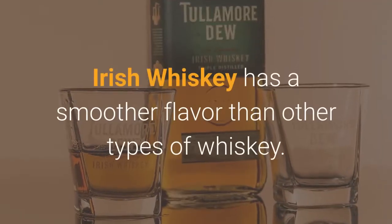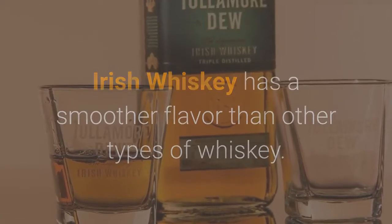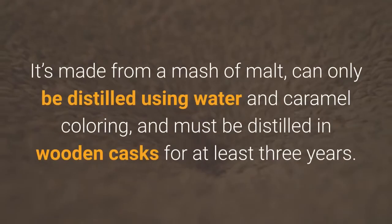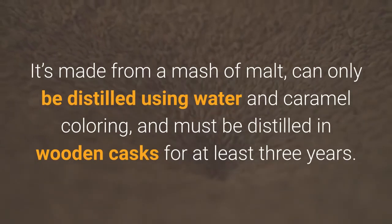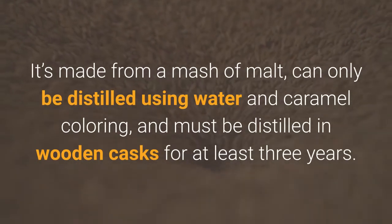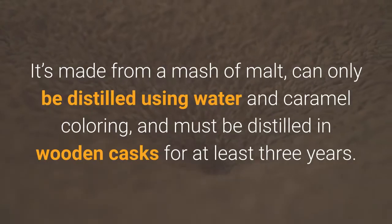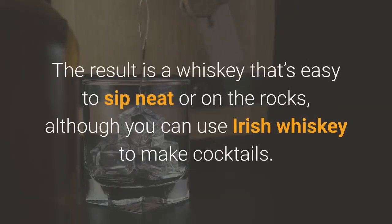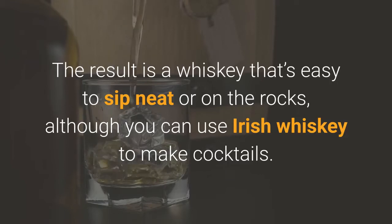Irish whiskey has a smoother flavour than other types of whiskey. It's made from a mash of malt, can only be distilled using water and caramel colouring, and must be aged in wooden casks for at least three years. The result is a whiskey that's easy to sip neat or on the rocks, although you can also use Irish whiskey to make cocktails.